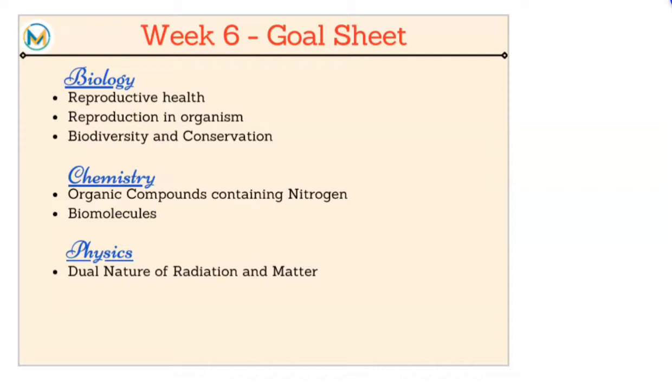This is how our goal sheet for Week 6 looks like. We have three chapters in biology, two chapters in chemistry, and one in physics. From each of these biology chapters, we can expect two questions.